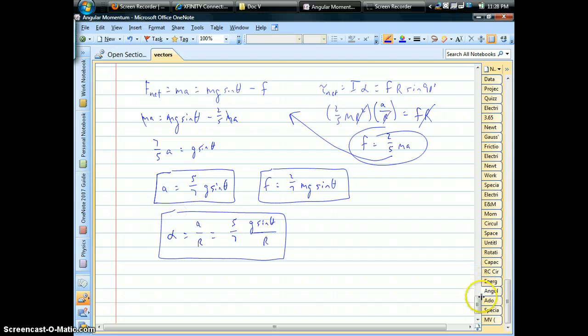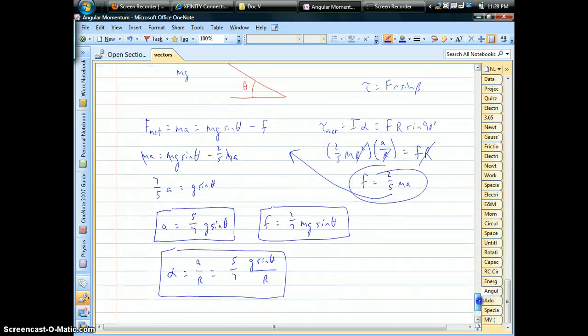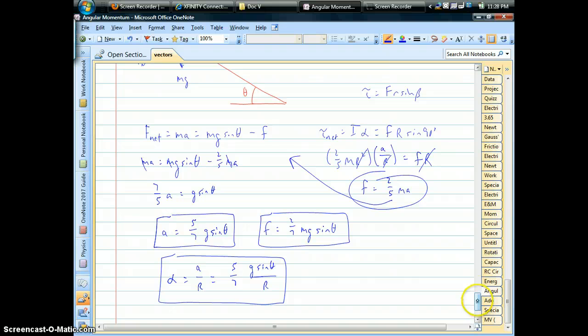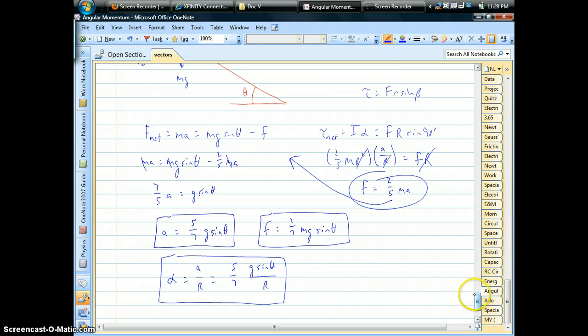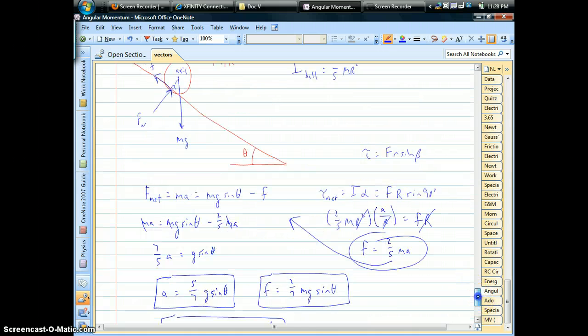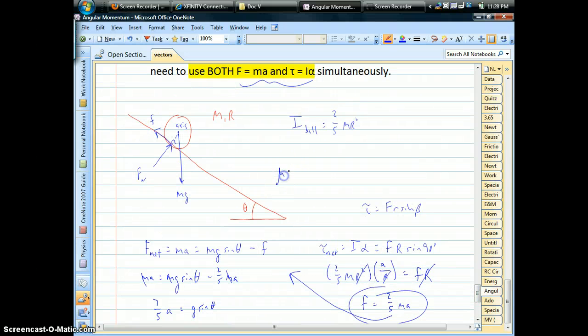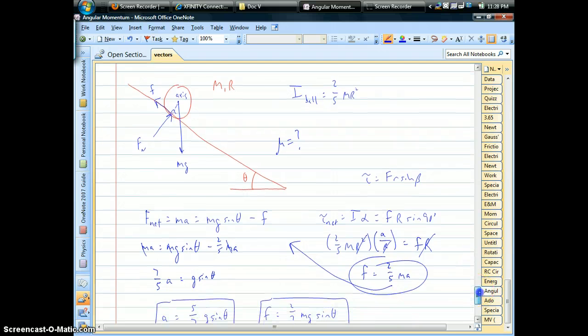And because these are constant accelerations, you could ask for things like, after 3 seconds, how far does it move? What angle does it spin through? How fast is it going? All those typical sorts of constant acceleration type questions. Sometimes, they like to ask, what's the mu value that's responsible for there being no slipping?